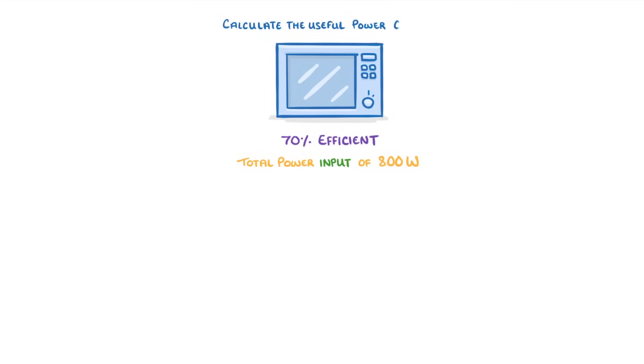Let's try another example with power this time. This particular microwave is 70% efficient and has a total power input of 800 watts. Calculate the useful power output.